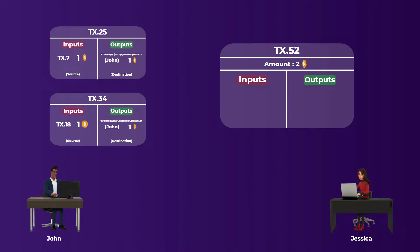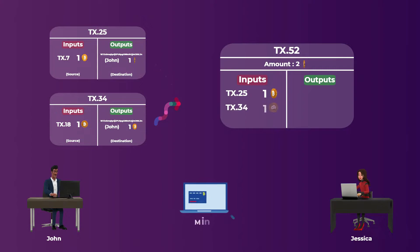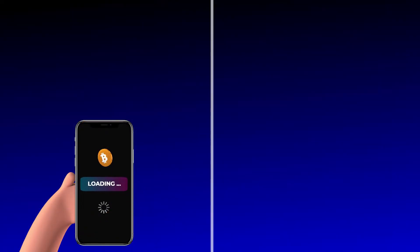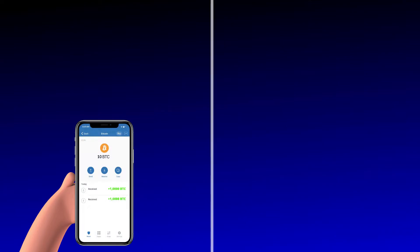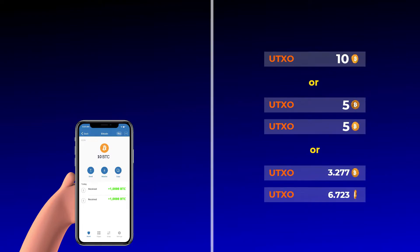Let's say John didn't spend any of these two bitcoins. It's a bit unusual phrasing, but it is said that John has two unspent transaction outputs. He can now use them as inputs in his new transaction to Jessica. When this transaction reaches the miners on the Bitcoin network, they verify that the two outputs have not been spent before, and then the transaction gets confirmed. That leaves Jessica with a UTXO for two bitcoins, which she can use as an input in a new transaction in the future. When you open your wallet, it scans the blockchain for any unspent outputs you own and adds them all up to show you your balance. So if your balance is 10 bitcoins, it can be just one UTXO for 10 bitcoins, or two for five bitcoins each, or even one UTXO for 3.277 bitcoins and another for 6.723 bitcoins.